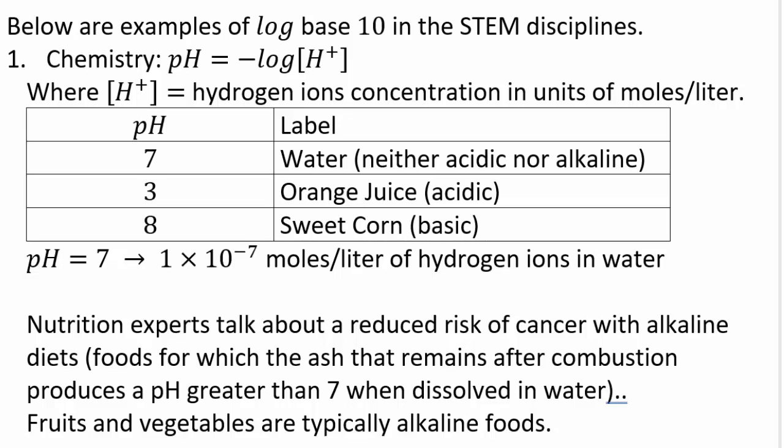Water has a pH of 7 and is considered neutral — neither acidic nor alkaline. Orange juice is acidic with a pH of 3, whereas sweet corn is basic or alkaline with a pH of 8. Nutritionists talk about eating more alkaline foods to reduce cancer risk. Alkaline foods are defined as foods whose ash after combustion produces a pH greater than 7 when dissolved in water — most fruits and vegetables are typically alkaline foods.